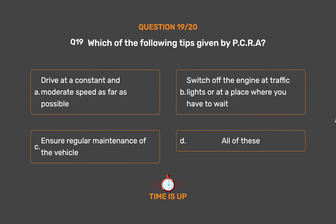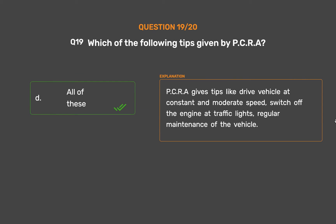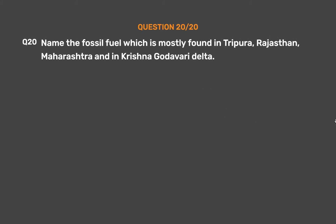The correct answer is Option D: All of these. PCRA gives tips like drive the vehicle at a constant and moderate speed, switch off the engine at traffic lights, and ensure regular maintenance of the vehicle.